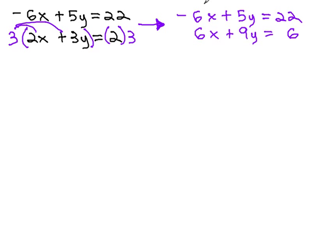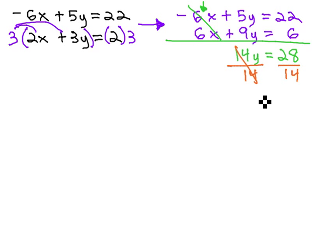We now have opposites in front of the x's, negative 6x and positive 6x, which is what we're looking for. They'll subtract out to 0, and when we add the y's, we get 14y equals 28. Finally, we can divide both sides by 14 to isolate the y, which is equal to 2.